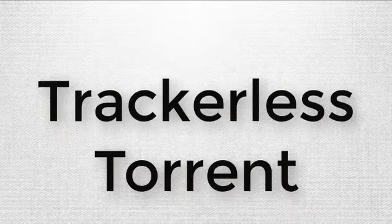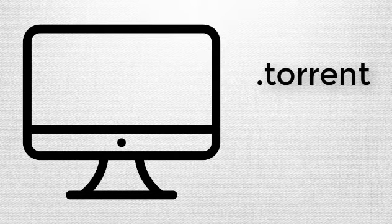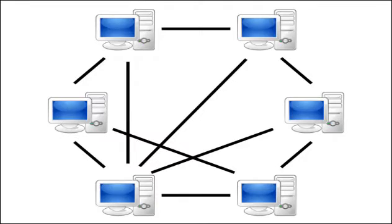Torrent trackers work by tracking all the IP addresses of all the computers who have downloaded or uploaded the same file from that torrent. So whenever you download something, it tracks down all the nodes, connects them, and provides you the download speed.